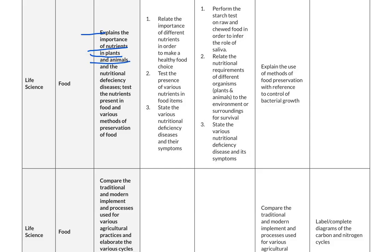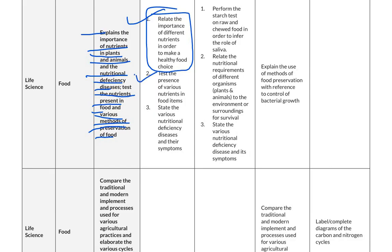The next competency is to explain the importance of nutrients in plants and animals and the nutritional deficiency diseases, test the nutrients present in food, and various methods of preservation of food. For below basic level, questions will relate the importance of different nutrients to make a healthy food choice, test the presence of various nutrients in food items, and state the various nutritional deficiency diseases and their symptoms.